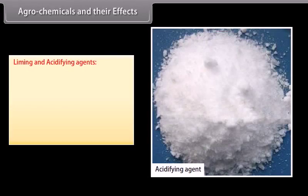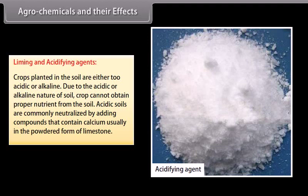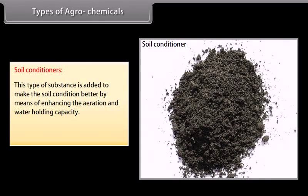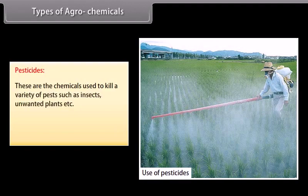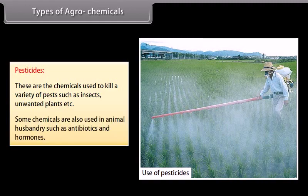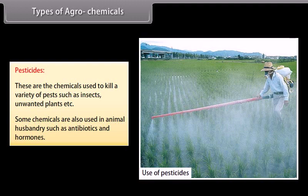Liming and acidifying agents: Crops planted in soil that is either too acidic or alkaline cannot obtain proper nutrients. Acidic soils are commonly neutralized by adding compounds that contain calcium, usually in the powdered form of limestone. Soil conditioners are substances added to improve soil condition by enhancing aeration and water-holding capacity. Manures and crop residues are used in the production of soil conditioners. Pesticides are chemicals used to kill a variety of pests such as insects and unwanted plants. Some chemicals are also used in animal husbandry, such as antibiotics and hormones.